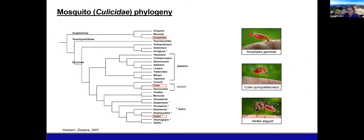I cut the introduction relatively short, assuming many people are familiar with mosquitoes as vectors. Briefly, there are three major genera: Anopheles, Culex, and Aedes mosquitoes. Anopheles are mainly known as vectors of malaria — plasmodium parasites. Culex mosquitoes transmit both arboviruses and parasites, including plasmodium as avian malaria and filarial parasites. Aedes aegypti are mainly vectors of arboviruses. I'll talk more about Culex and Aedes in the next slide.